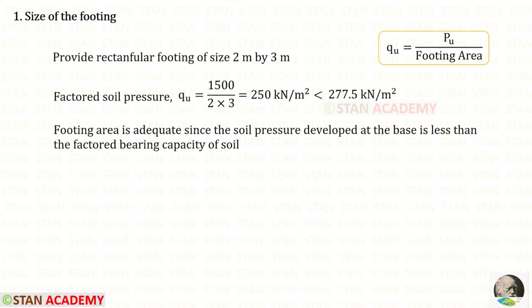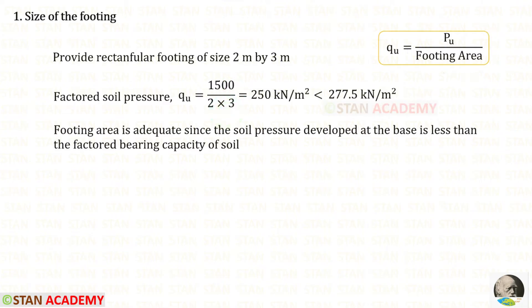Now let us find the factored soil pressure. The formula is PU divided by footing area. PU is the factored column load, and footing area is 2 × 3. We get QU = 250 kN/m². This is less than the factored bearing capacity of 277.5 kN/m², so the footing area is adequate.